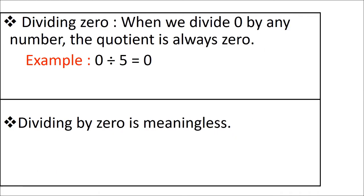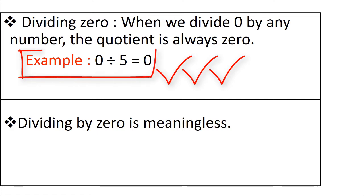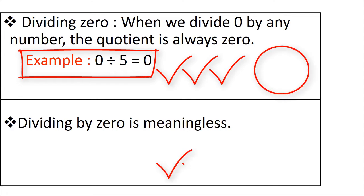Third property: dividing 0. When we divide 0 by any number, the quotient is always 0. For example, 0 divided by 5 is equal to 0. Zero means nothing — when nothing is divided among 5 children, no one gets anything. So when 0 is divided by any number, the quotient is 0. Division by 0 is meaningless — there is no meaning.